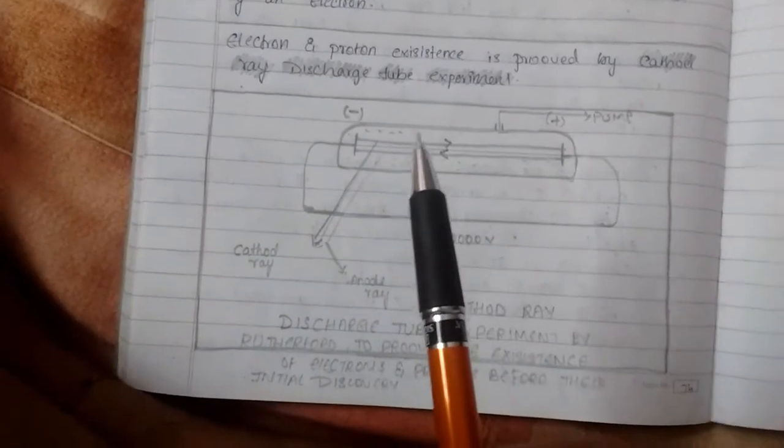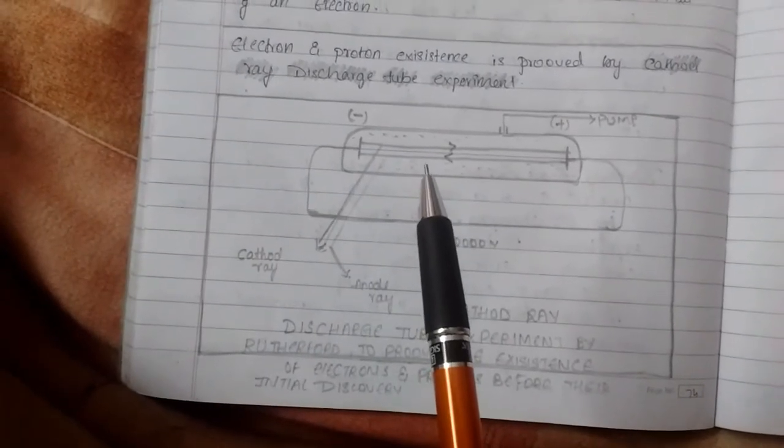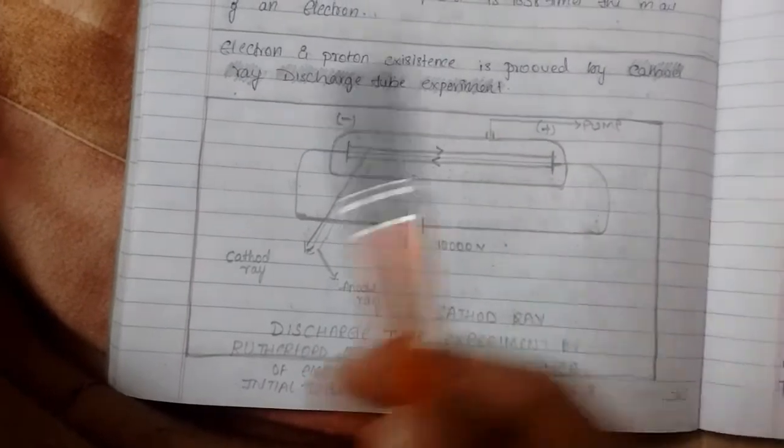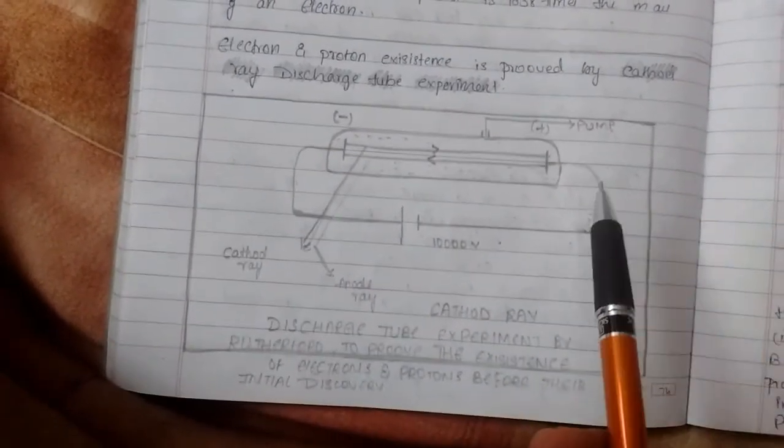Hence, we can see electron particles and anode ray shows proton particles. Therefore, it was proven that there was existence of electrons and protons.